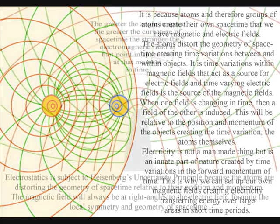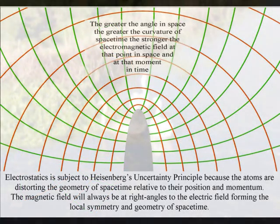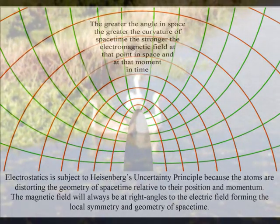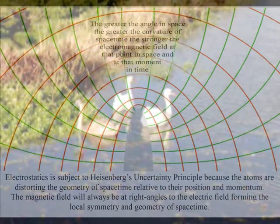A time-varying electric field acts as a source of a magnetic field, and the time-varying magnetic field is the source of electric fields. When either field is changing in time, then a field of the other is induced.